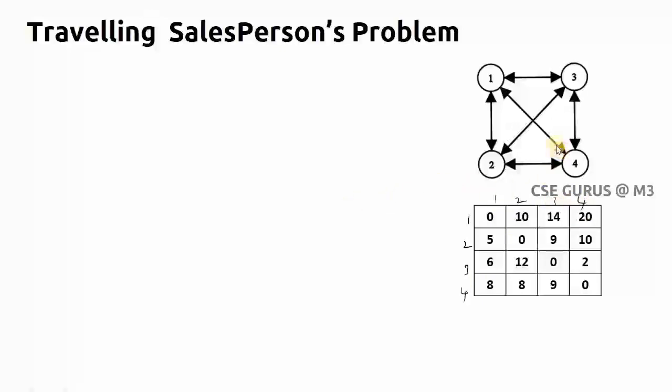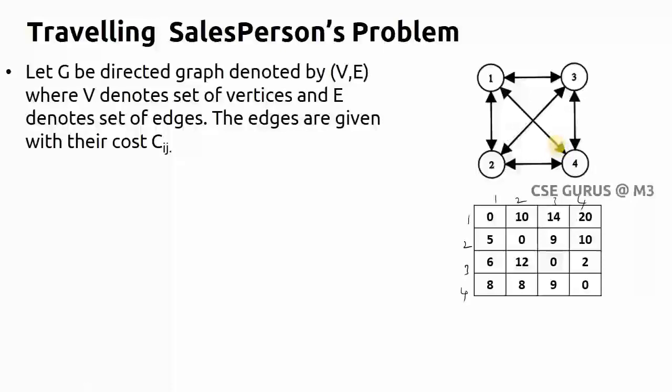It's a graph G denoted by (V,E), where V denotes the set of vertices and E denotes the set of edges. The edges are given with their cost C_ij, and whatever values we have, we call it as cost.